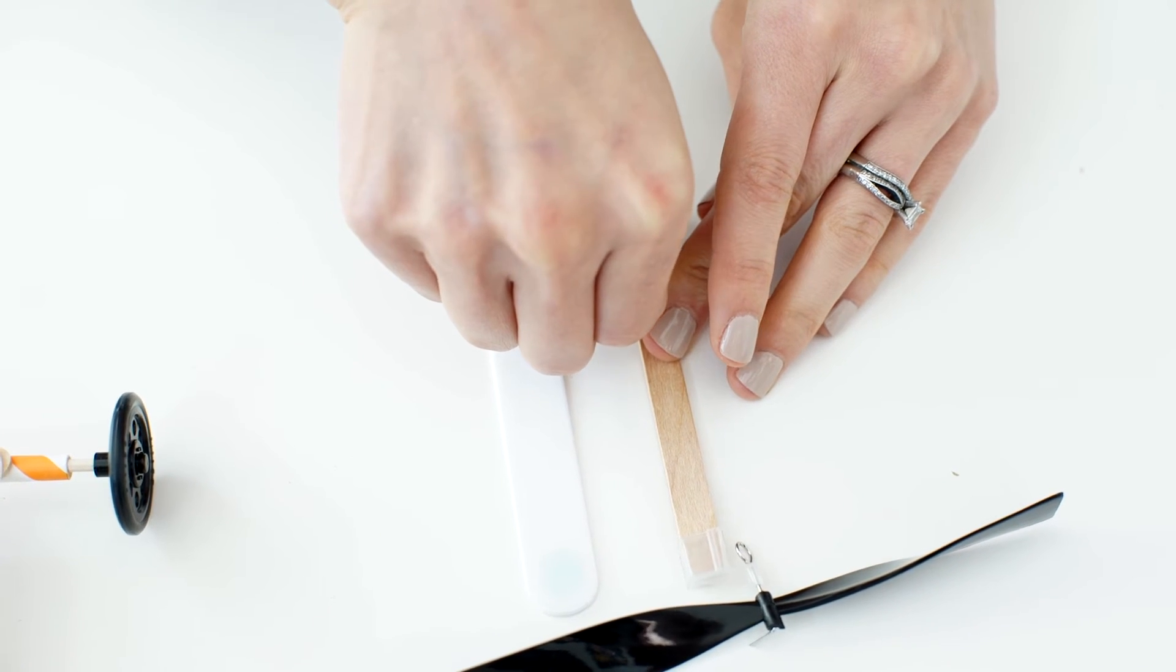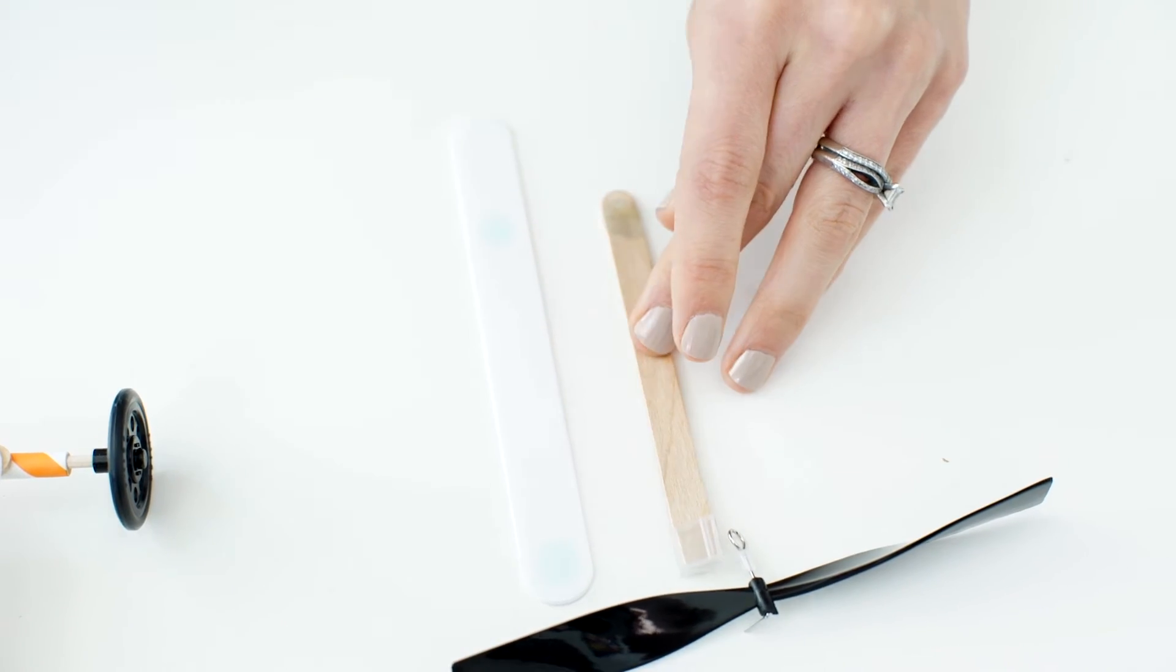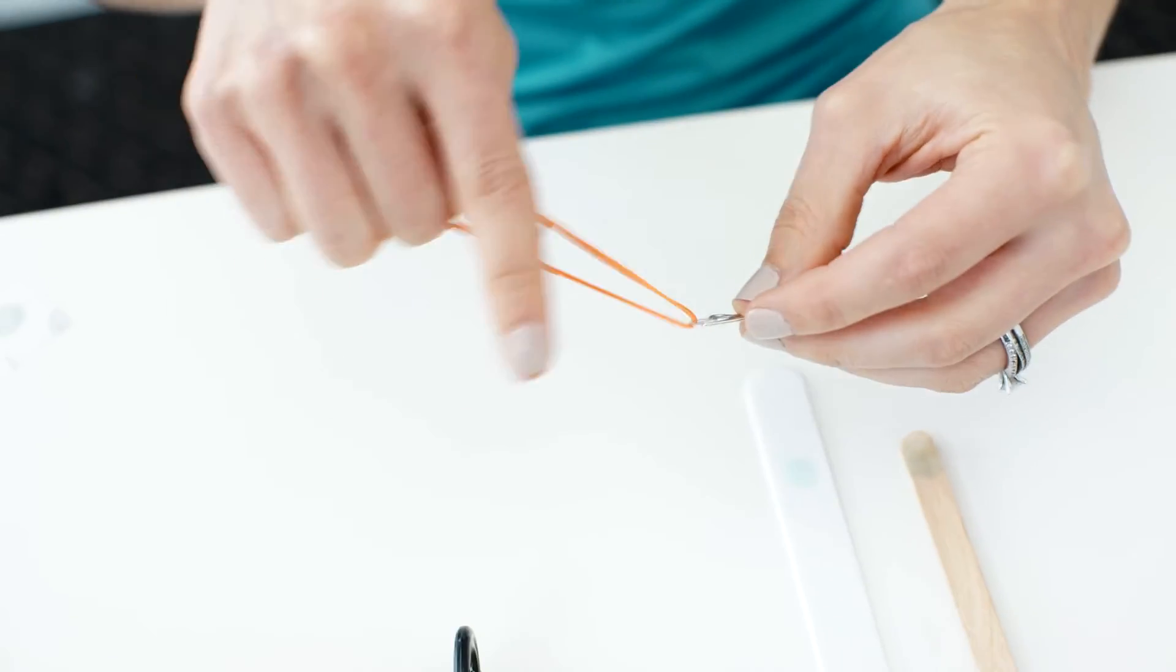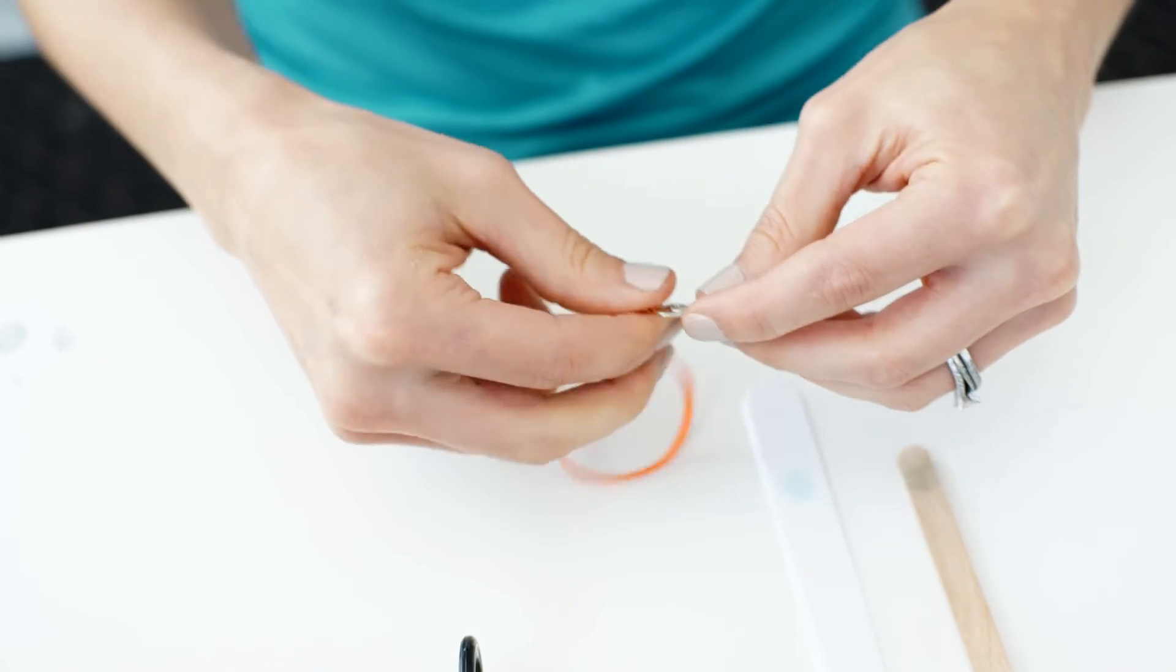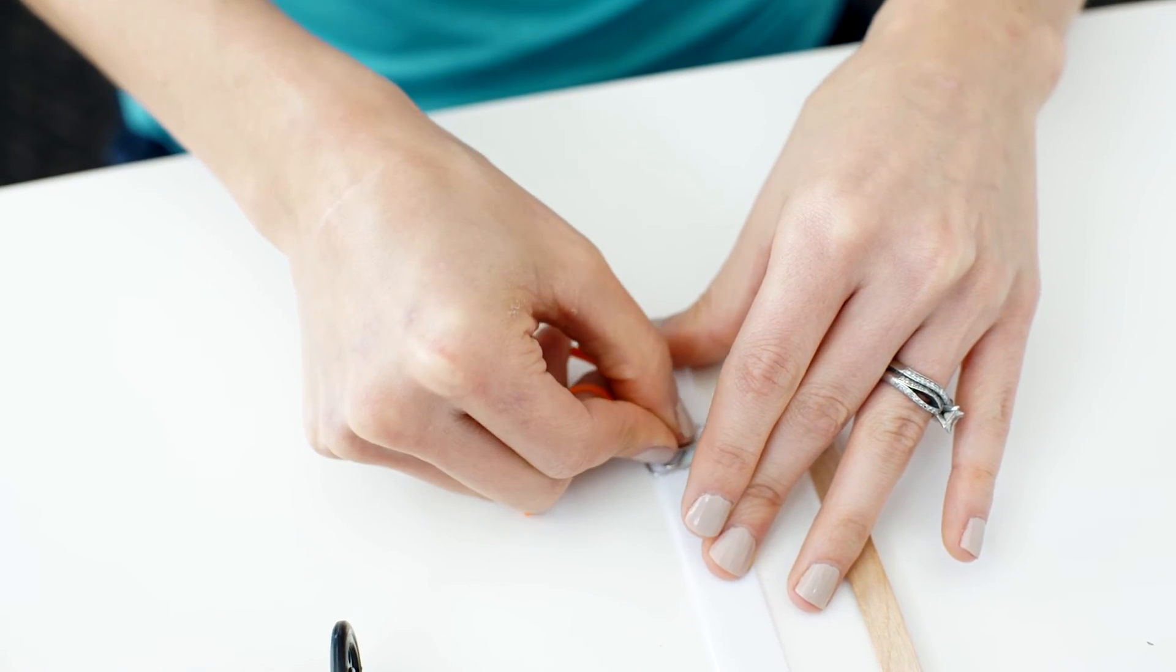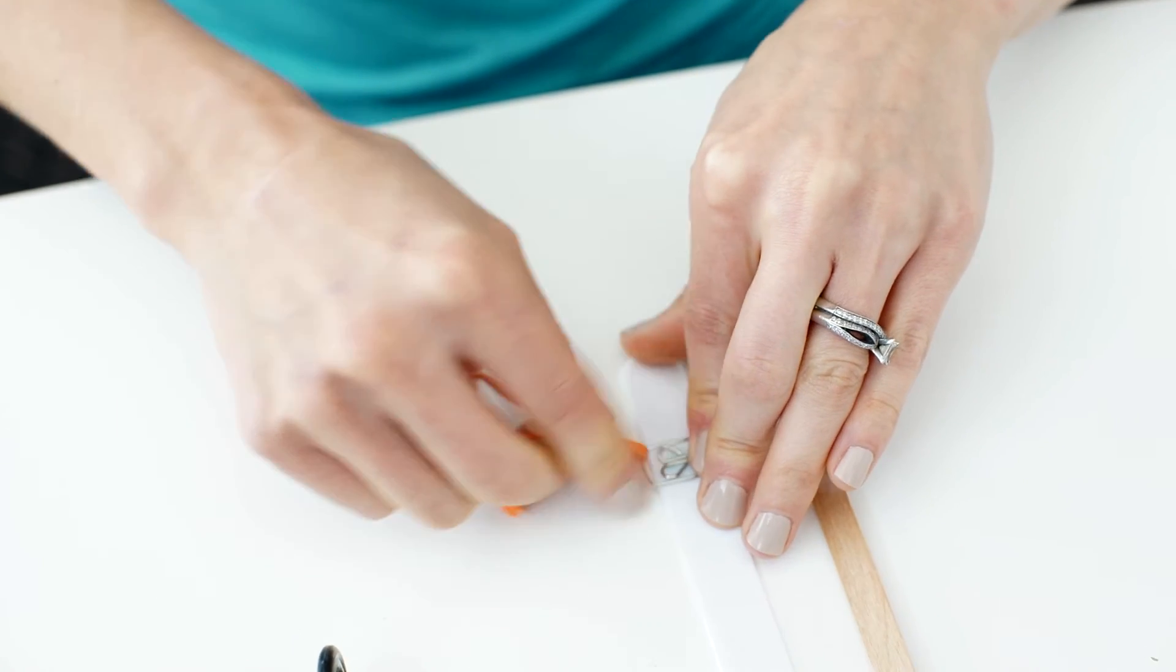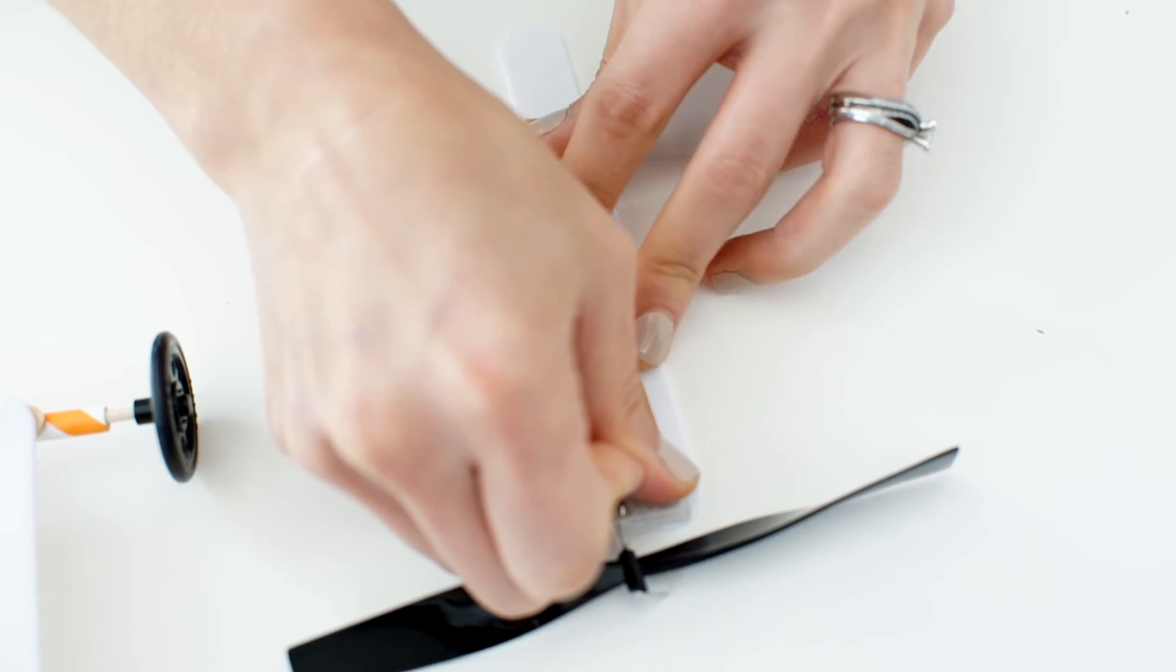Place a glue dot on the bottom of your wood stick with your rubber band facing out. Place your paper clip on top of your white stick. Then stick them together.